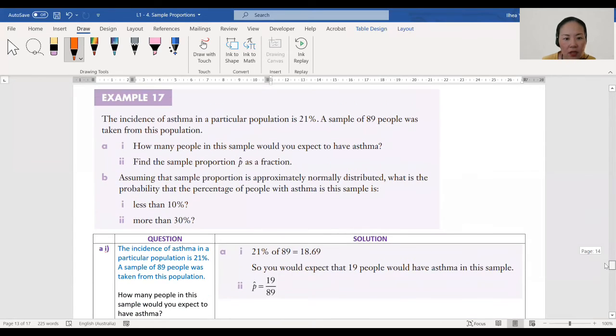Now let's have a look at Example 17. Lorena, can you read it out for us? The incidence of asthma in a particular population is 21%. A sample of 89 people was taken from this population. a) i) How many people in this sample would you expect to have asthma? ii) Find the sample proportion p hat as a fraction. b) Assuming that sample proportion is approximately normally distributed, what is the probability that the percentage of people with asthma in this sample is: less than 10%, more than 30%?